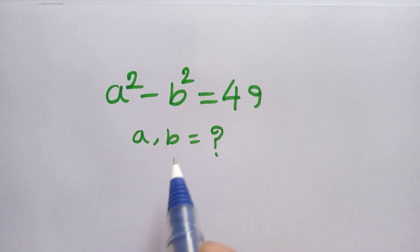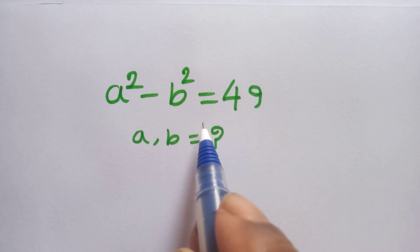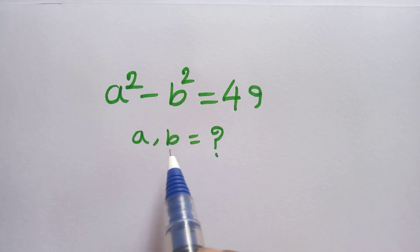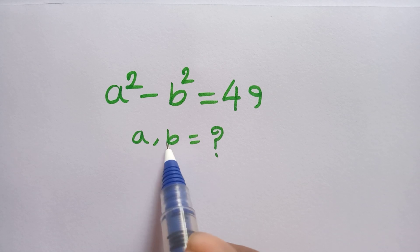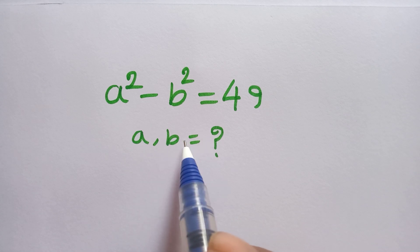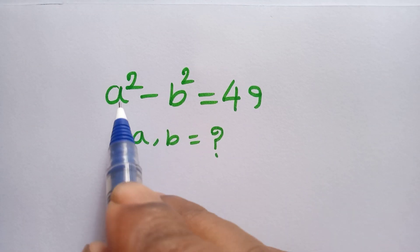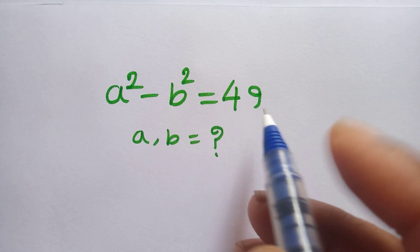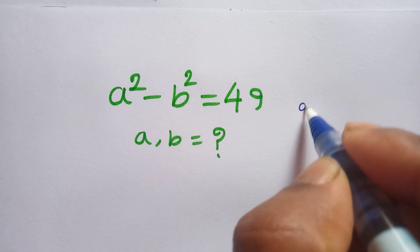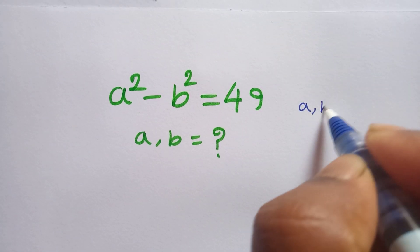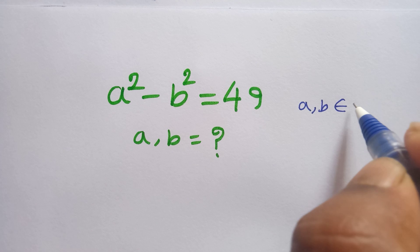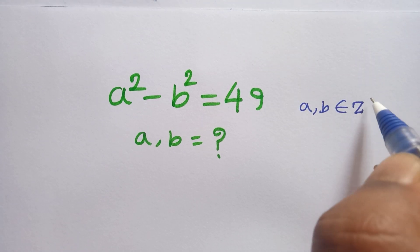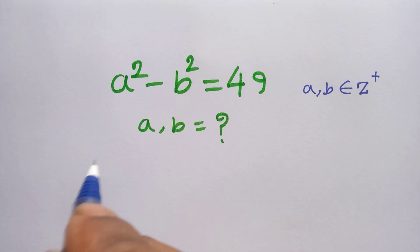Hi everyone, welcome. In this video I am going to show how to find the value of a and b where a squared minus b squared is equal to 49, and a and b are positive integer numbers.